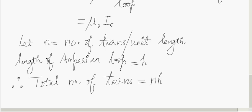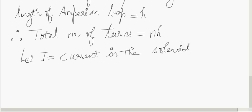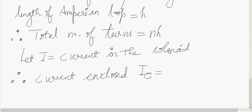Therefore, total number of turns in that length H will be equal to N into H. Let IE be the current in the solenoid. Therefore, then the current enclosed will be equal to the total number of turns multiplied by current, NH into I.